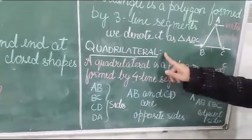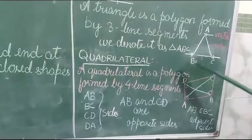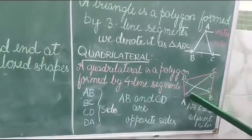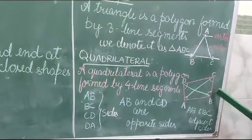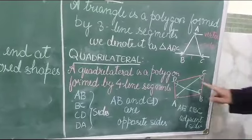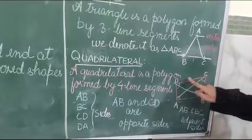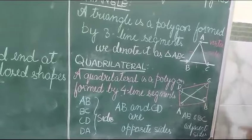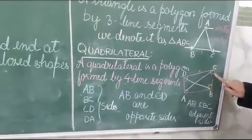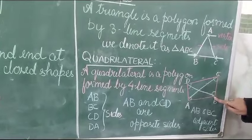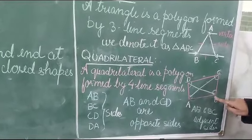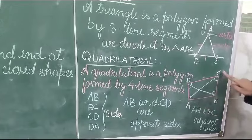Next one is quadrilateral. A quadrilateral is also a polygon, but it is made up of four line segments. You can see the shape of the quadrilateral, where four line segments AB, BC, CD, and DA are there. These all are the sides of the quadrilateral. In this figure, AB and CD are the opposite sides of the polygon. And AB and BC are known as adjacent sides — where two line segments meet at a common vertex. Like AB and BC meet at the common vertex B, so they are adjacent sides.